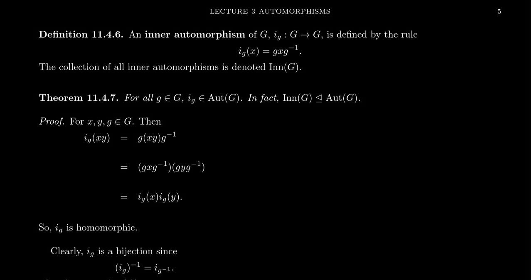Continuing our discussion of automorphisms, I want to now talk about the idea of an inner automorphism. When we defined automorphisms previously, I mentioned it's a very, very important group action — that every automorphism group acts on its group via the permutation action, and that this is super important. It turns out there's a class of automorphisms we've already been studying, and that's conjugation — and that's what an inner automorphism is.